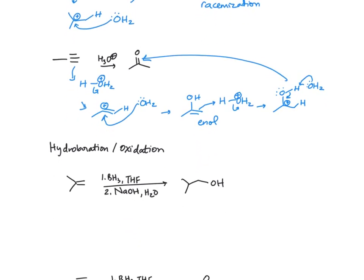For hydroboration-oxidation, you don't need to know the mechanism. You just get the less substituted, anti-Markovnikov product. The key intermediate is the product of step one, which reacts with sodium hydroxide and water to give you the anti-Markovnikov product.